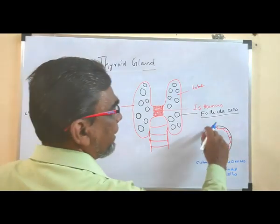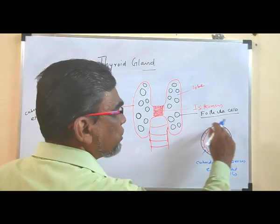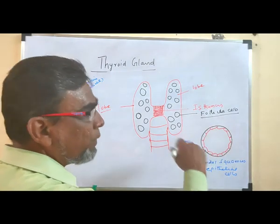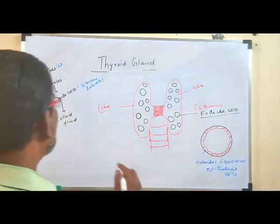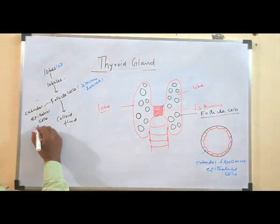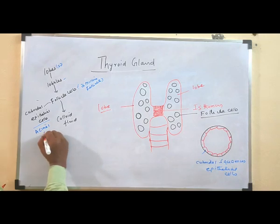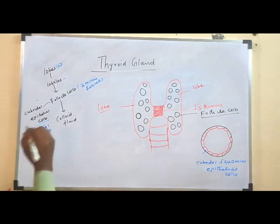This arrangement is essential for the synthesis of thyroxine, which we will discuss later. These cuboidal cells are also referred to as acinar cells.